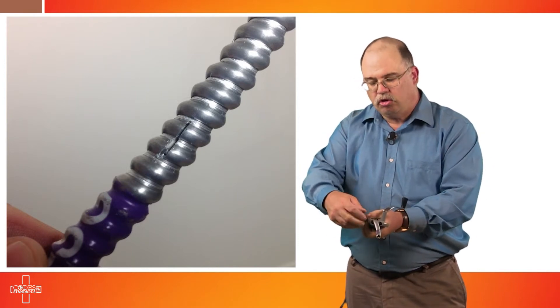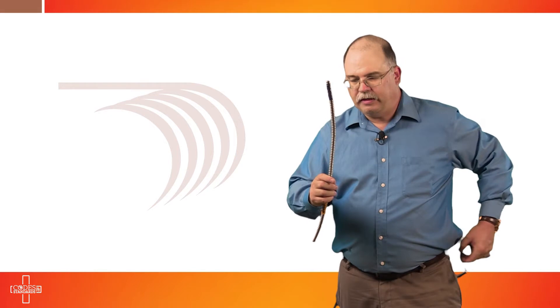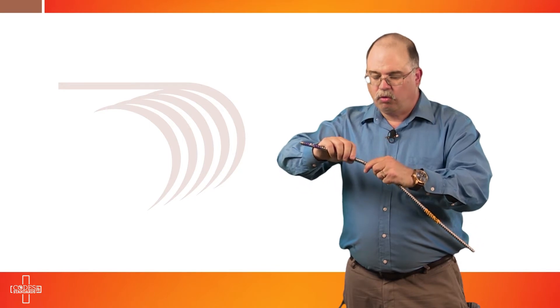At that point, you'll loosen the set screw, pull the Type MC Smart Ground product out of the device, and you'll notice you have a cut here. You want to twist the metallic sheathing in a counterclockwise way and then slowly remove the metallic sheathing from the cable.